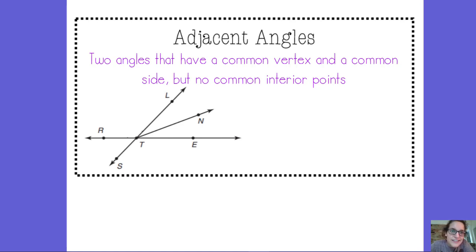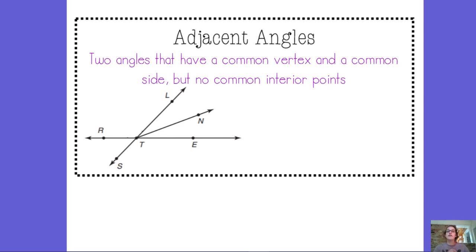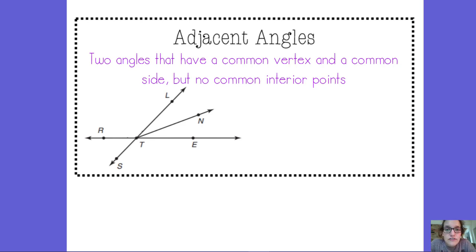New vocab words to go ahead and add to your glossary: adjacent angles. Adjacent angles are two angles that have a common vertex and a common side but no common interior points. That's the fancy definition of adjacent angles. Basically, adjacent angles are next to each other.